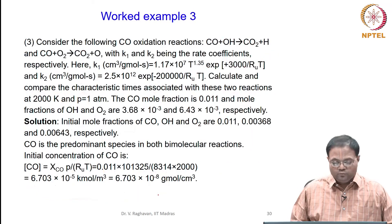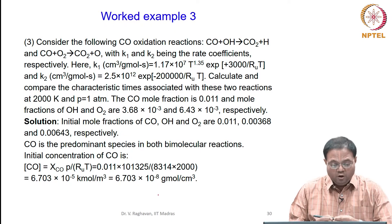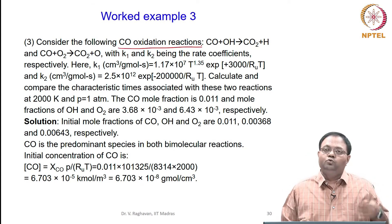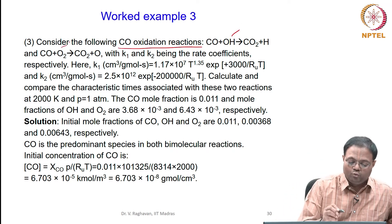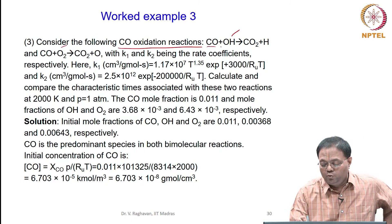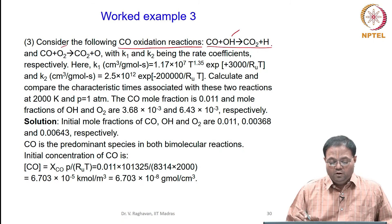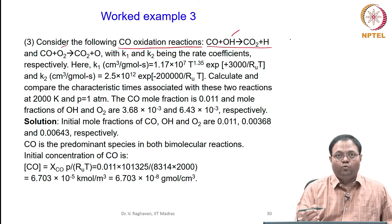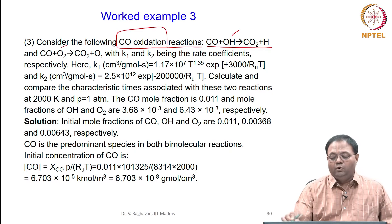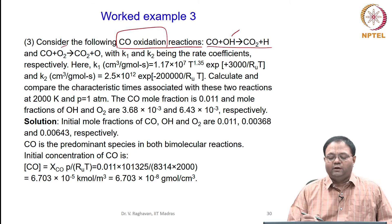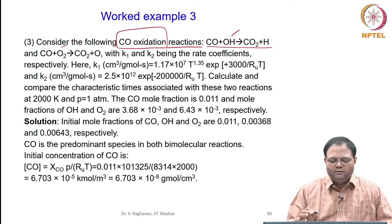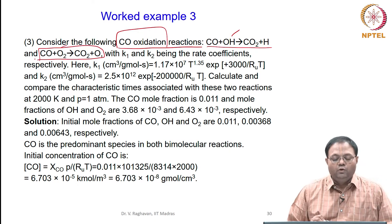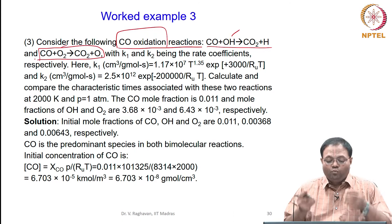In the third example, we consider CO oxidation reactions. CO is oxidized by two species: OH and O₂. Reaction 1 is CO plus OH giving CO₂ plus H — a very important elementary reaction. Reaction 2 is CO plus O₂ giving CO₂ plus O. For both, only the forward reaction is considered.